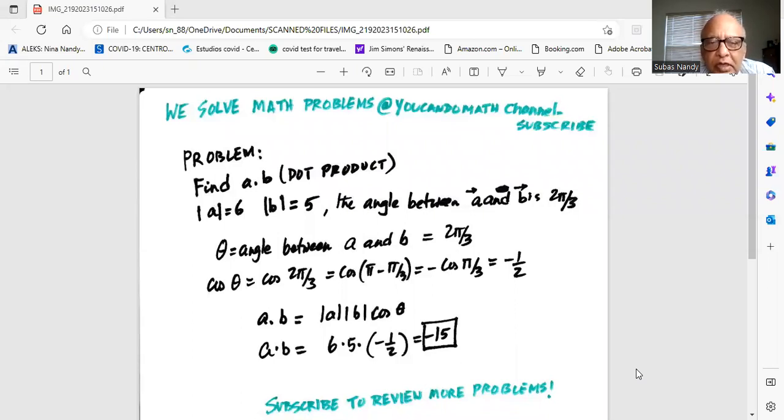Find a dot b where a and b are two vectors. The magnitude of vector a is 6, magnitude of vector b is 5, and the angle between vector a and vector b is 2π/3. Theta, the angle between a and b, is 2π/3.